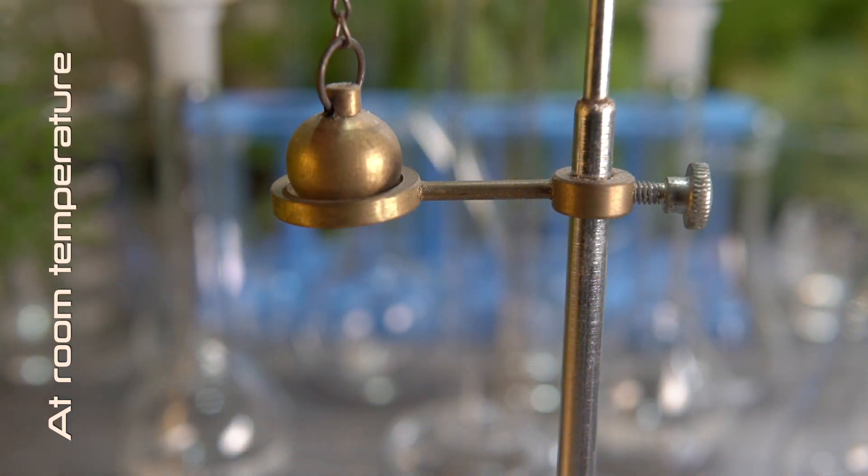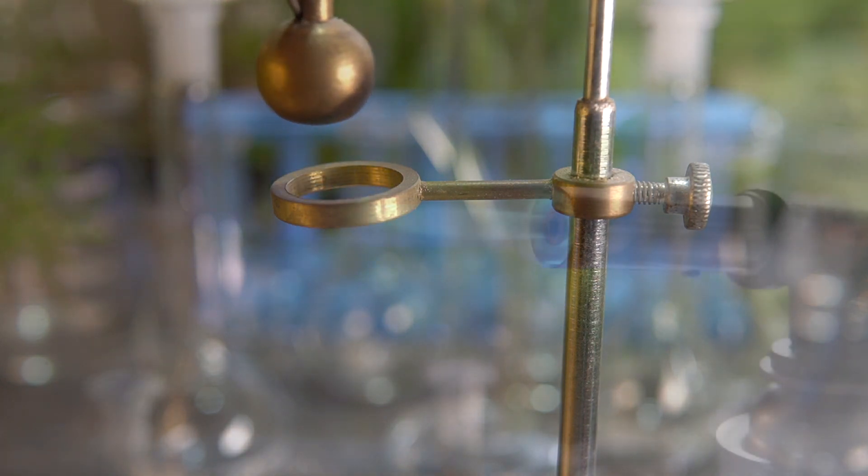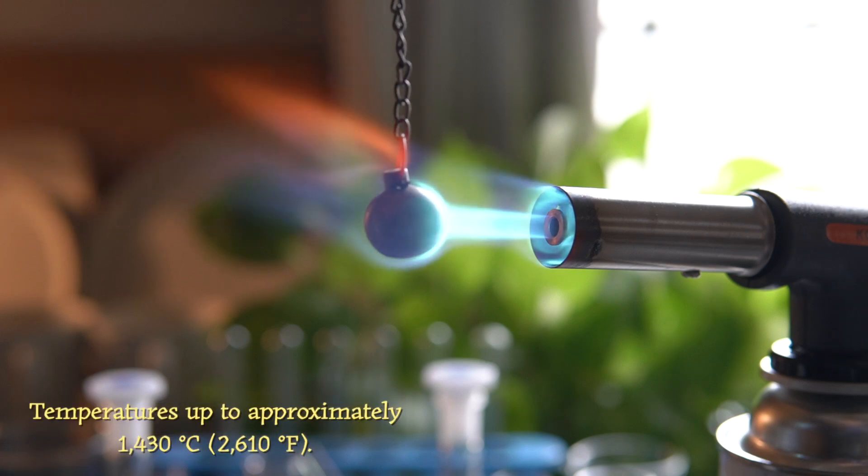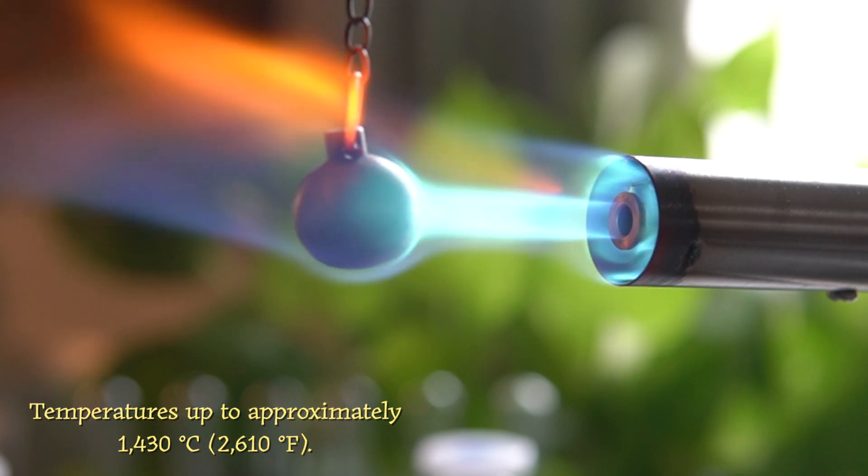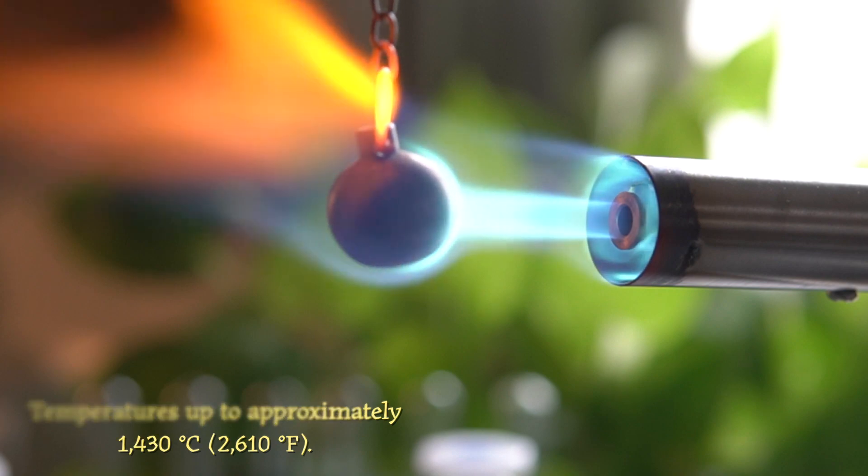This means the diameter of the ring is slightly bigger than the diameter of the ball. Now we will heat the ball using a butane torch for about 3 to 5 minutes at a temperature of approximately 1500 degrees Celsius.